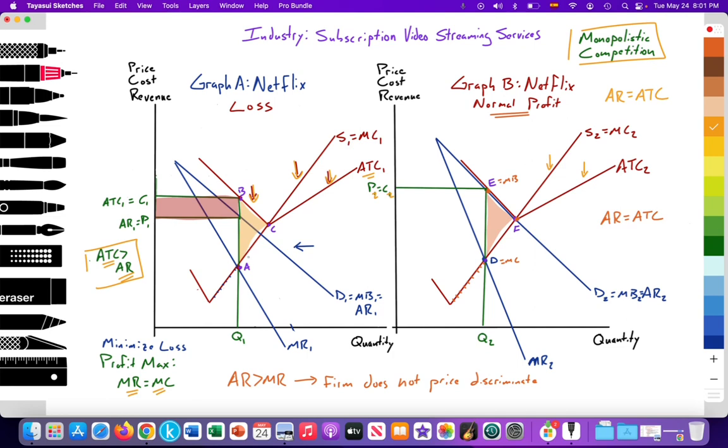Quick note about allocative efficiency. We see that at Q1, Q2, the marginal benefit is greater than the marginal cost. So there's an underallocation. The welfare loss is the triangular area that's reflected. In addition, we also see that at Q1, that the average total cost at point B or point E is greater than minimum ATC. So both firms are productively inefficient. And that's it. If you have any questions, feel free to comment and don't forget to subscribe and to like. Thank you so much.